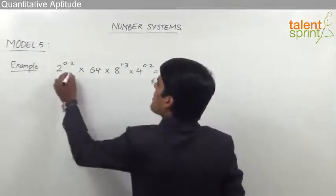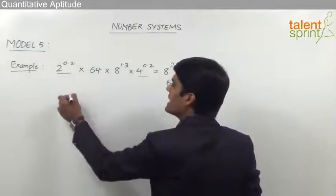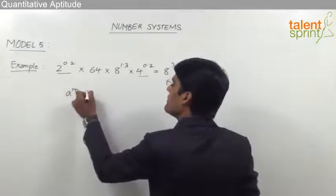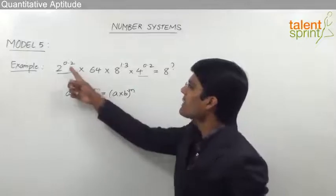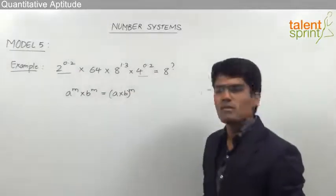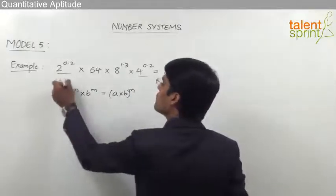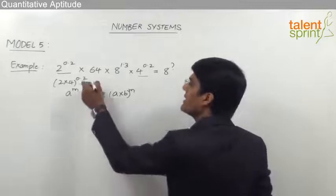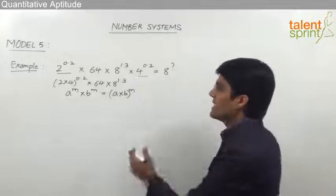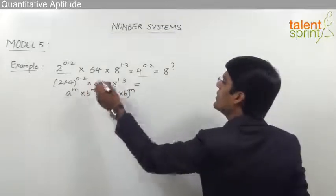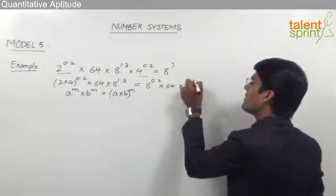We observe that 2 power 0.2 and 4 power 0.2 have equal powers. Using the rule a power m into b power m equals a into b whole power m, since the powers are both 0.2, the bases can be multiplied. So this becomes 2 into 4, whole to the power of 0.2, and the remaining part is 64 into 8 power 1.3. That simplifies to 8 power 0.2 into 64 into 8 power 1.3.